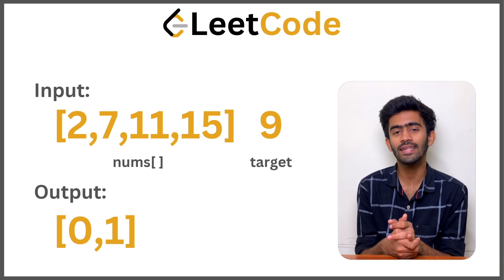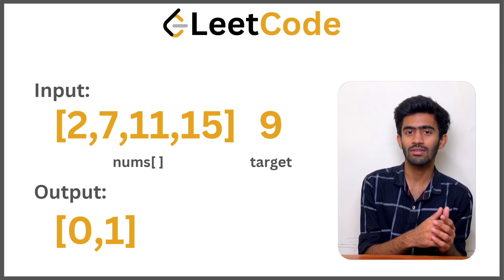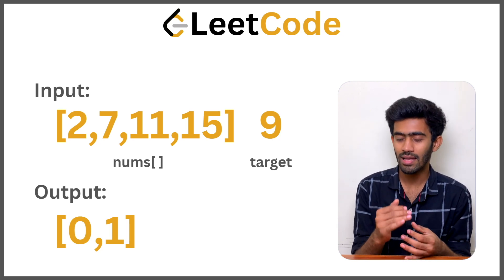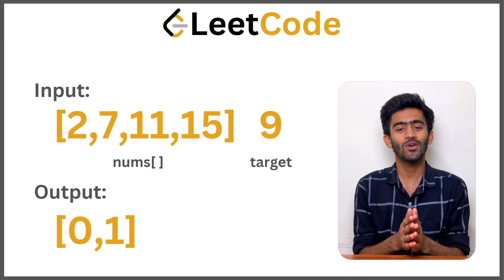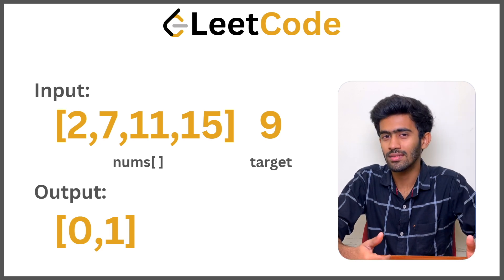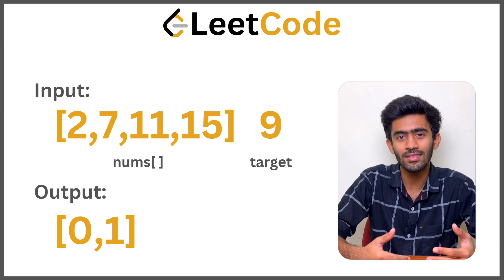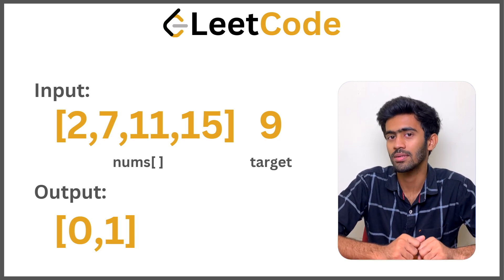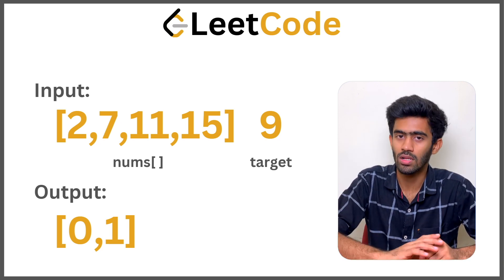How do we do that? We'll go with a hash map. Whenever we want to reduce our time complexity from O(n²) to O(n), for the most part we'll always use a hash map to store information so that we can retrieve it later in O(1) time complexity. Let's use the hash map and find the algorithm to solve this question.